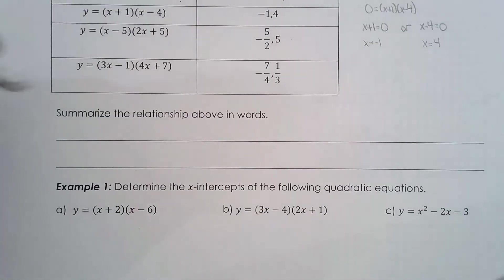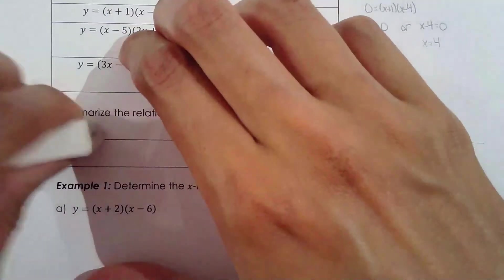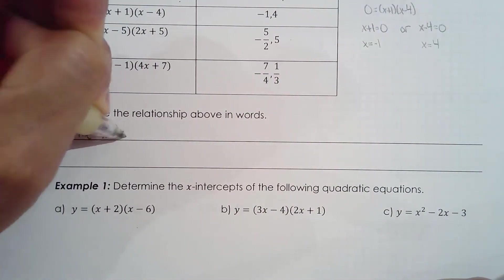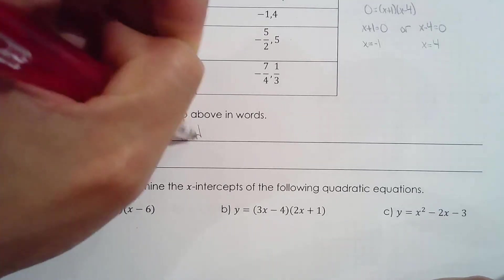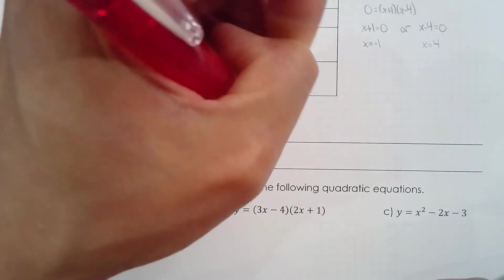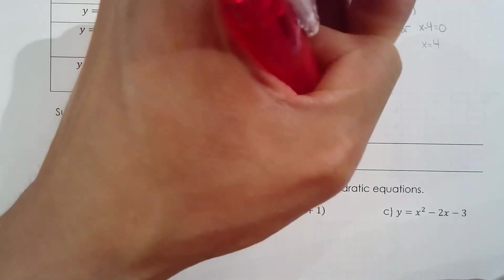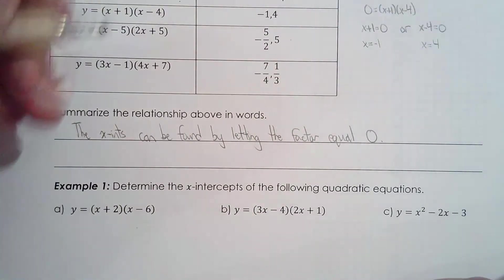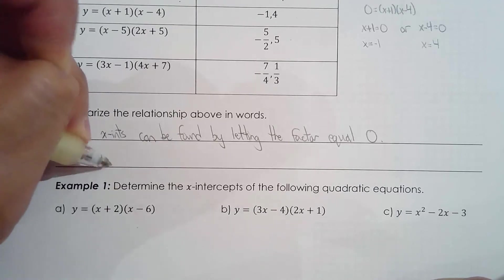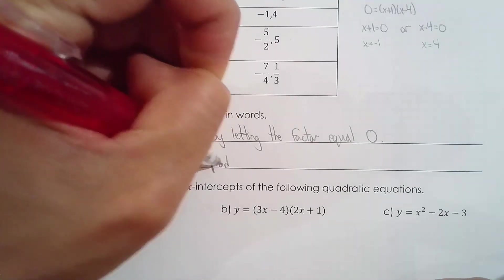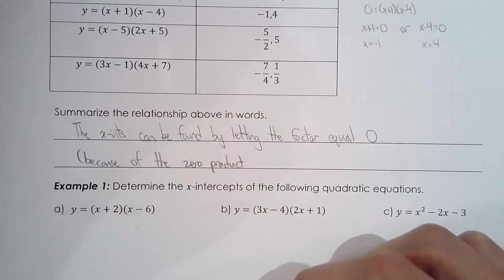To summarize: x-intercepts can be found by letting the factors equal zero, because of the zero product property. If either factor is zero, the product is zero — that's why we set each factor equal to zero.